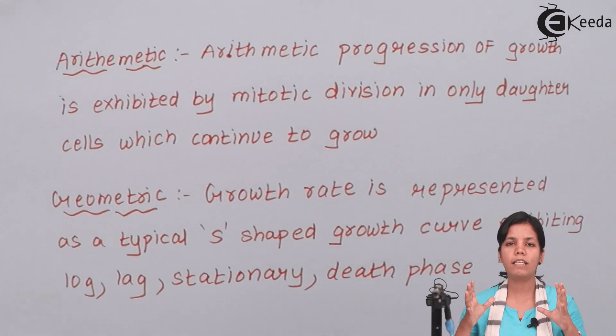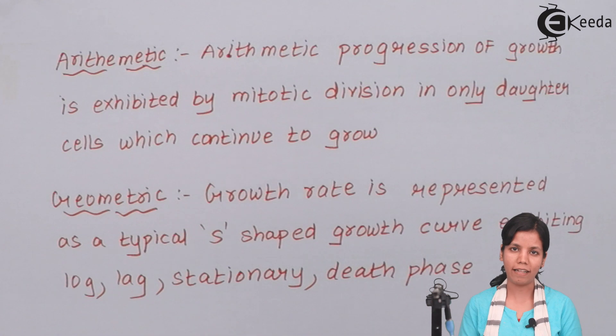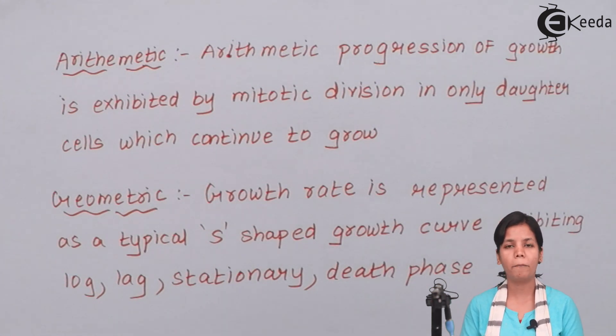Now, all these methods of reproduction can be judged using this mathematical equation, that is arithmetic progression plus geometric progression. So students, in this part of the chapter, we have studied how maths can help us decide whether a plant is growing or not. Isn't it interesting to know that maths and biology can be combined together to study plant growth? I hope you all are clear about these two types of progression. Thank you.